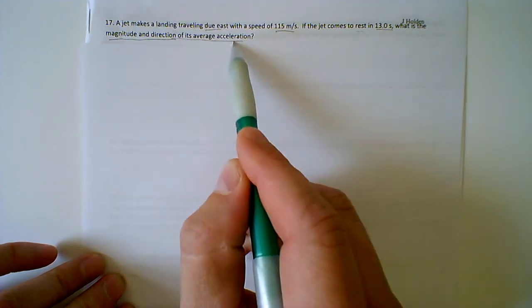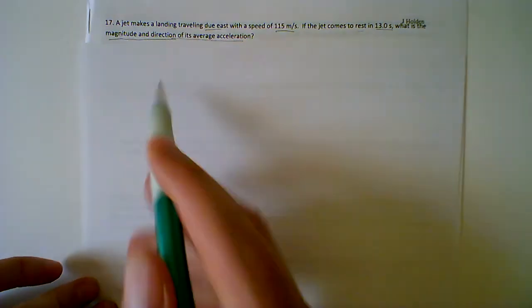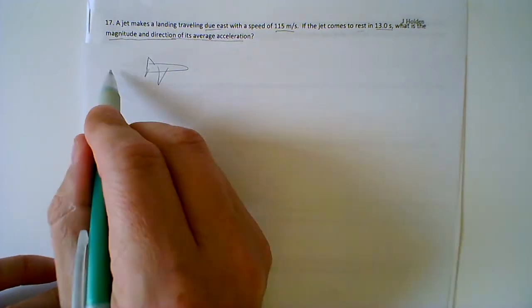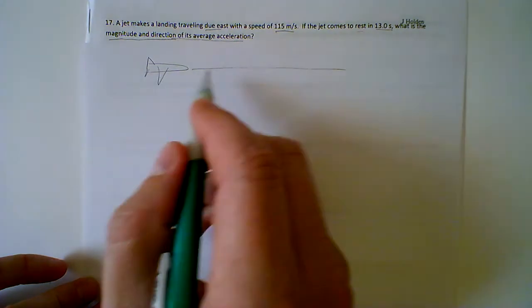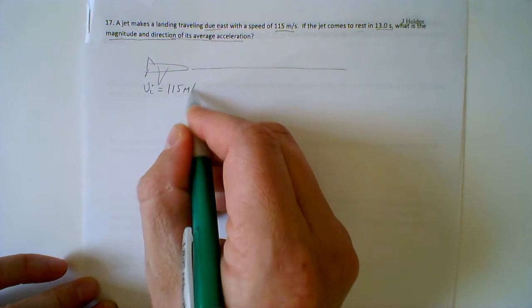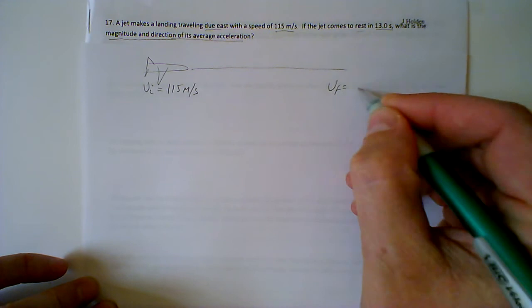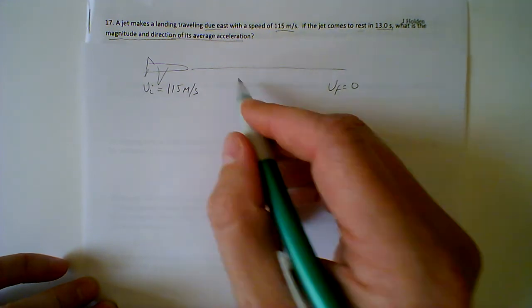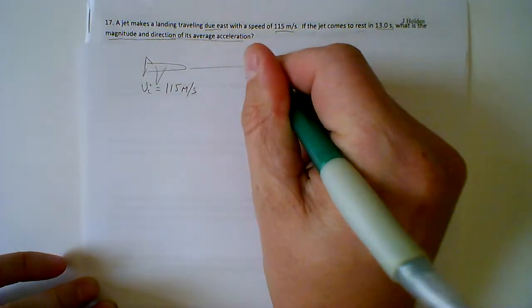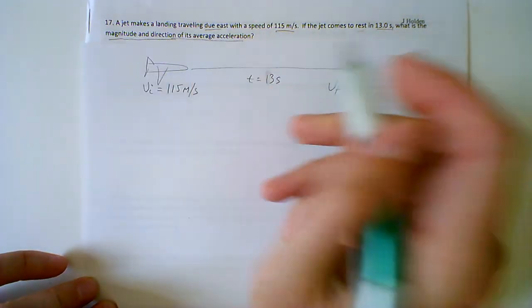We're trying to find acceleration. We want to know the number, unit, and direction. So we have a jetliner coming in for a landing. When it first hits the ground it's going 115 meters per second, and then it slows all the way down to rest — 0 meters per second. This whole thing is going to take 13 seconds. What is the magnitude and direction of its average acceleration?